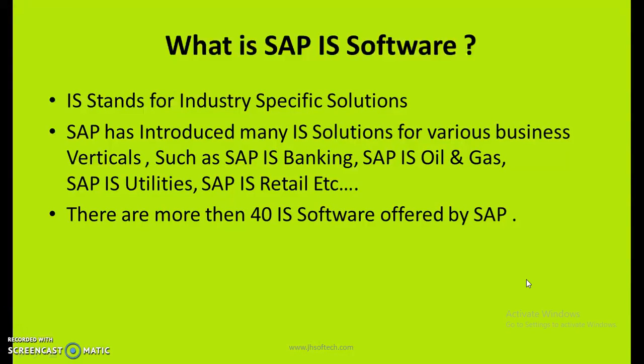What is SAP IS software? IS stands for Industry Specific. SAP has introduced many industry-specific solutions for different business verticals — for banking, oil and gas, utilities, and retail, among others. There are more than 40 industry-specific software solutions available, which an enterprise can implement to get solutions done quickly.